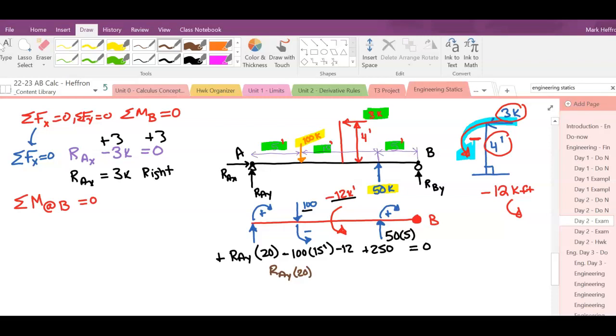That means RAy times 20 equals 1,262. We'll divide both sides by that 20. So we have 63.1 kips. The positive answer means our assumed direction of up is correct.